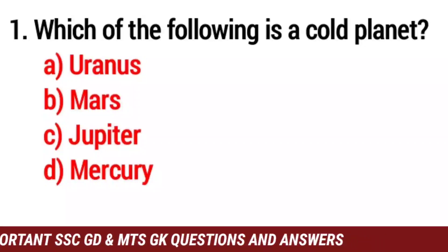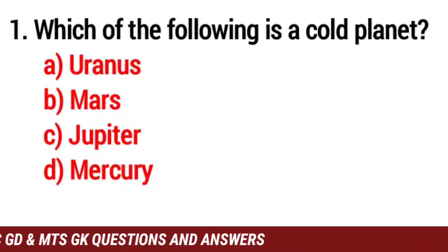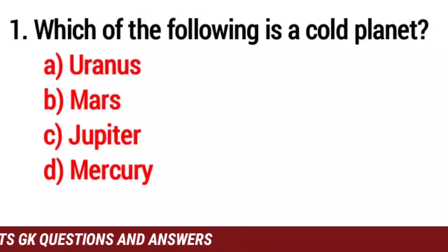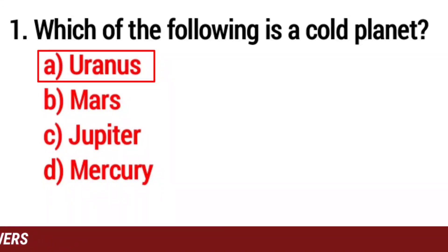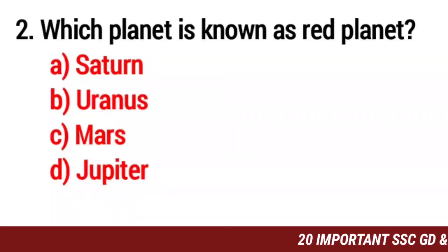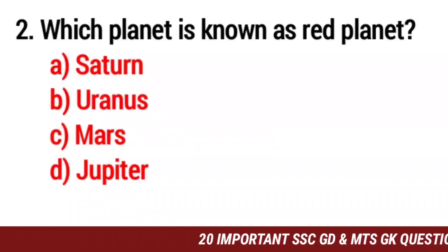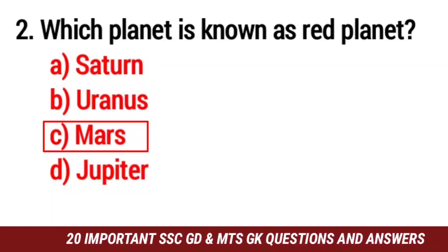Q1. Which of the following is a cold planet? The answer is A. Uranus. Q2. Which planet is known as the red planet? The answer is Mars.